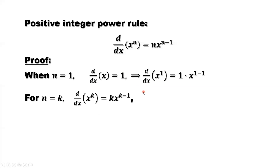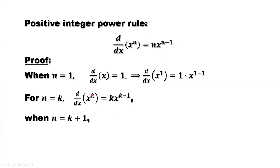Second step, based on the induction logic: if n equals k is true, can we derive that when n equals k plus 1, this result is also true? So we are assuming n equals k is true — that means the derivative of x to the power k equals k times x to the power k minus 1. We need to use this to derive the next result.